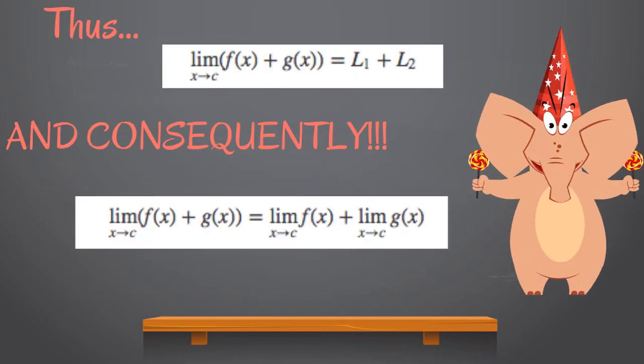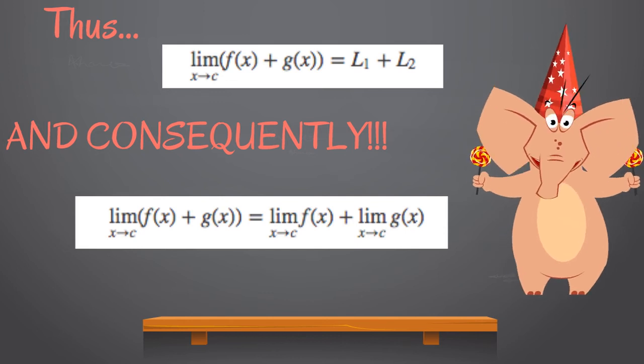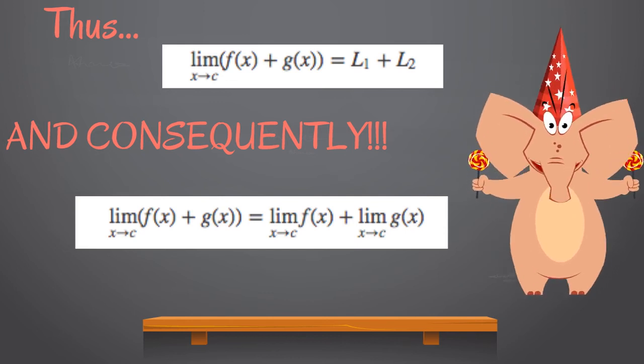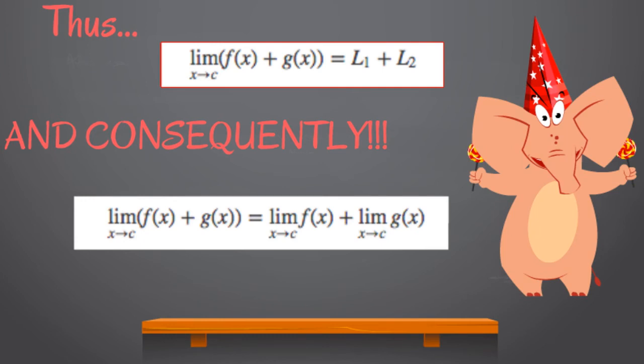Thus, limit x approaching c [f(x) + g(x)] equals L1 + L2, and consequently, limit x approaching c [f(x) + g(x)] equals limit x approaching c f(x) plus limit x approaching c g(x).